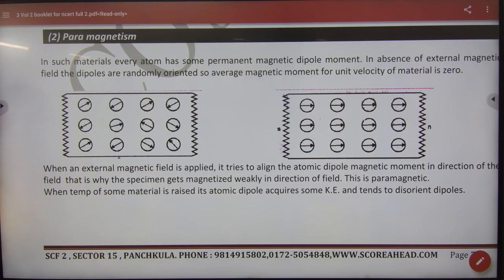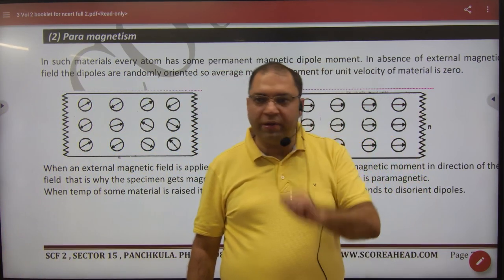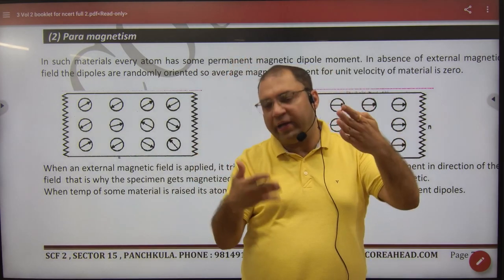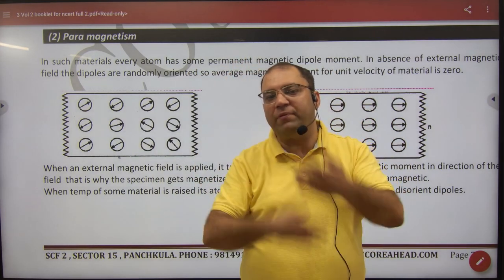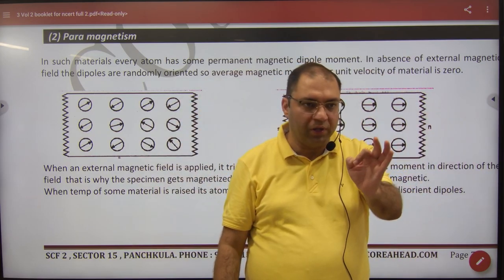Paramagnetism and ferromagnetism molecular theory. Paramagnetic substances are magnetic dipole moments. The dipole moment is in every direction. All the dipole moments cancel and the net dipole moment is zero. That's why it is not magnetic.